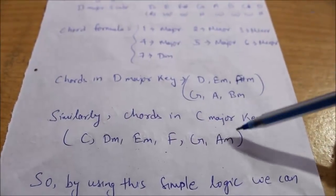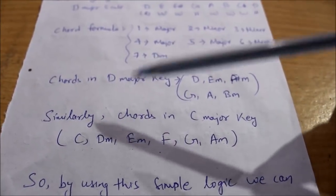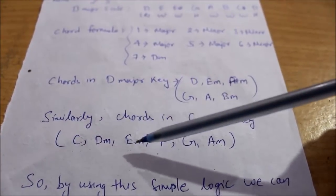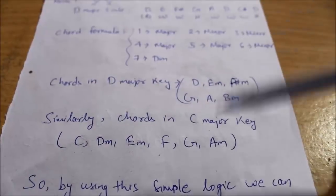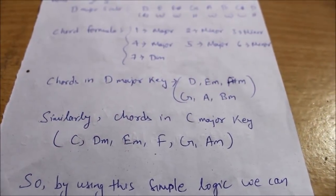This logic you can apply to any major key. For example, if you have C major, the chords would be C, D minor, E minor, F, G, A minor. You can do this for any major key - D major, E major, F# major, Bb major.